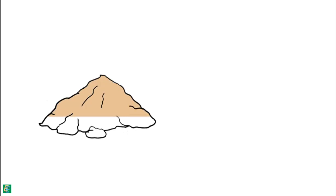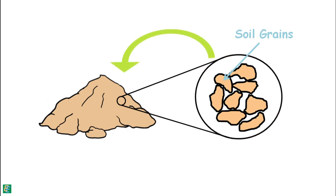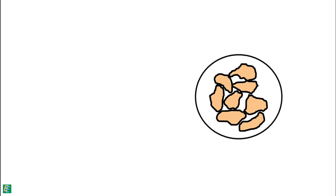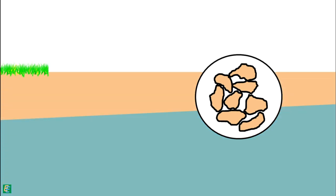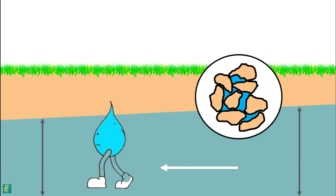A soil mass is a huge collection of soil particles called soil grains. When depositing in a soil mass, these soil grains enclose empty spaces between them, which we call voids. The water available under the ground moves inside the soil through these voids, from the region of high hydraulic head to low hydraulic head. This phenomenon of movement of water through the soil is called seepage.